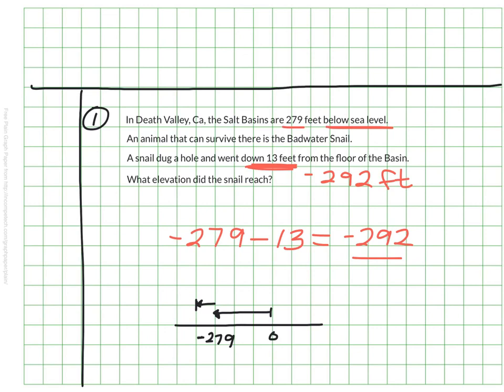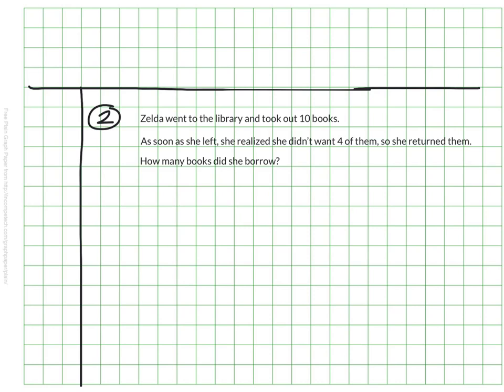And let's do one more. So here we have Zelda. Zelda went to the library and borrowed or took out 10 books. As soon as she left the library, she realized she didn't want four of them, so she turned around and returned those. And the question is, how many books did she borrow? I know this is something we can probably just quickly say, oh, I know how many she borrowed. But I just want to show you how this would look with our integers and how this would be represented with a number sentence. So make sure you have this. And remember that took out or borrow is basically telling us that we are talking about a negative integer.